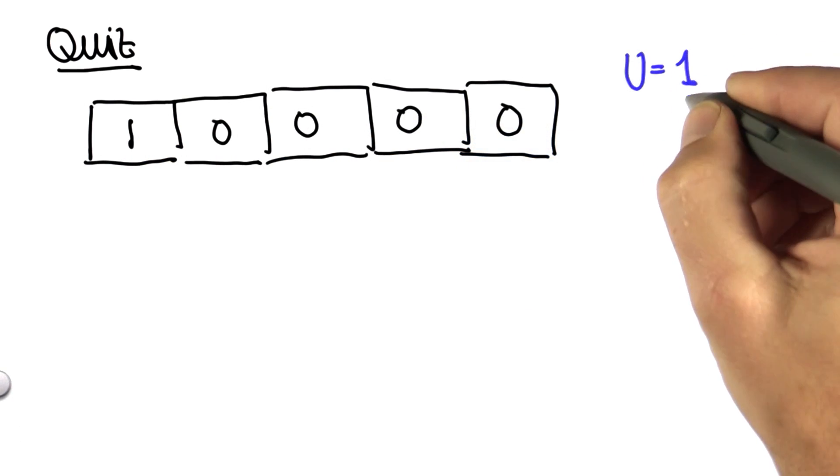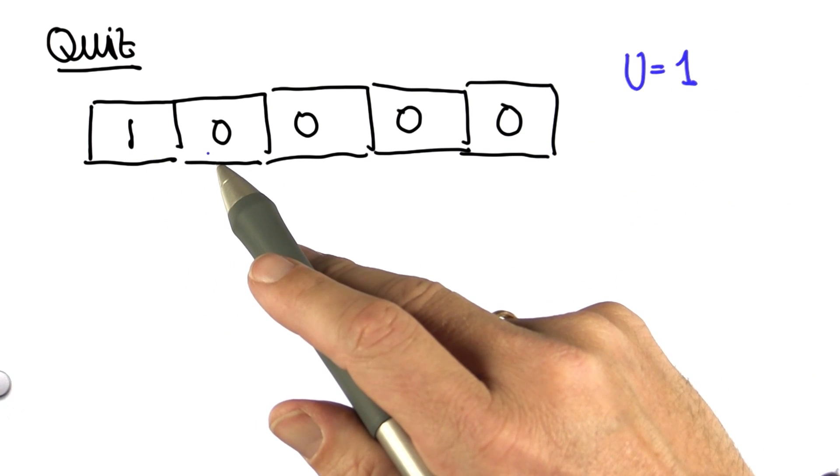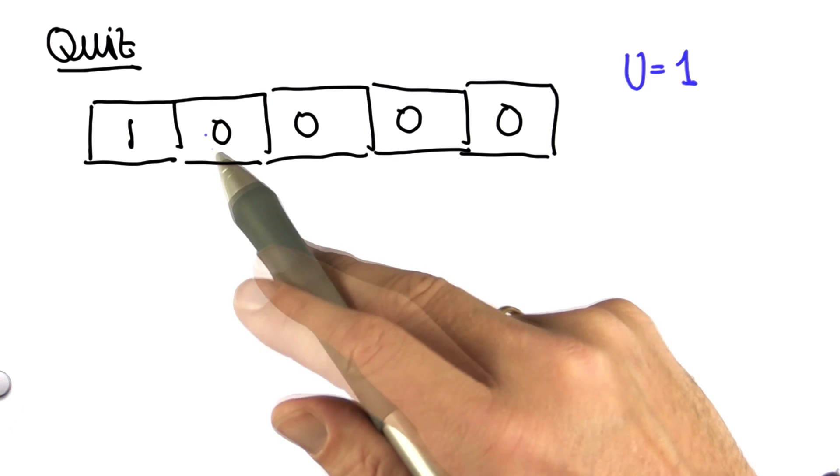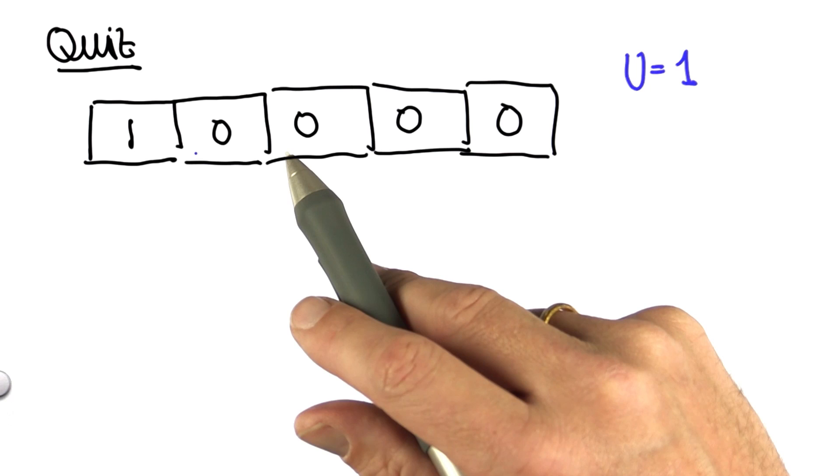Let's assume we do u equals 1, which means with 0.8 chance in each action, we transition 1 to the right. With 0.1 chance, we don't move at all, and with 0.1 chance again, we skip and move 2 steps.